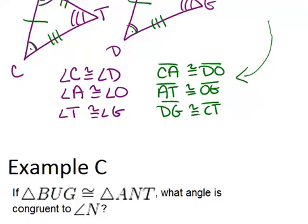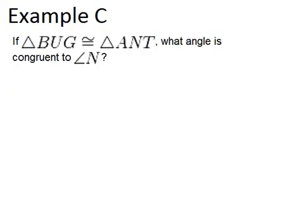Alright, let's look at example C. If triangle BUG is congruent to triangle ANT, what angle is congruent to angle N?